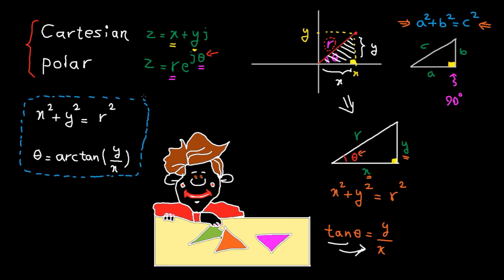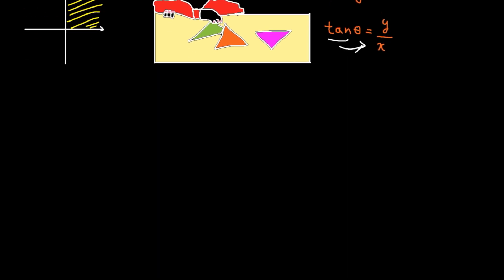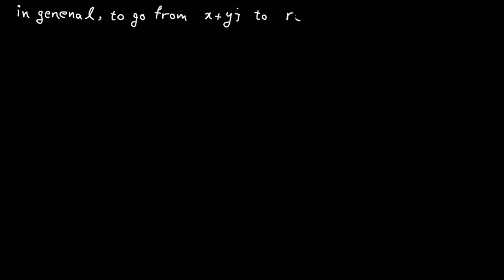This relation is true when the complex number is in the first quadrant, which means the real and imaginary parts are both positive. In general, to go from Cartesian to polar, here is what we need to do. R is super easy and you can find it by this simple equation.